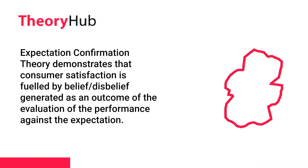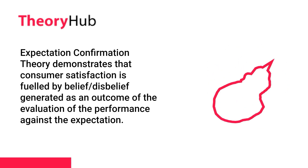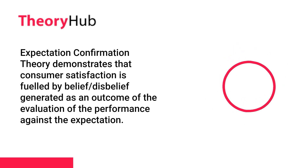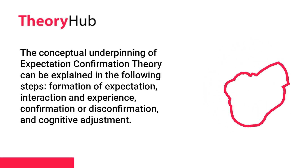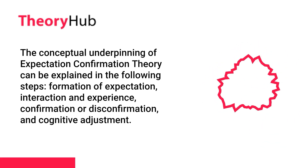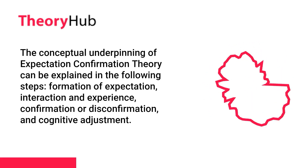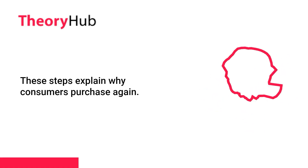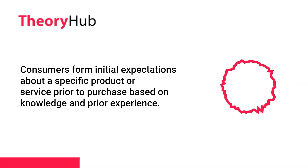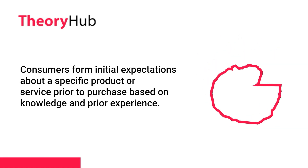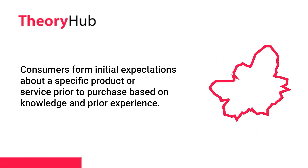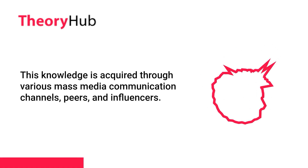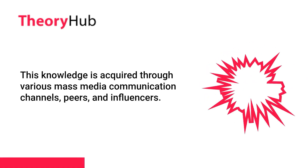Expectation Confirmation Theory demonstrates that consumer satisfaction is fueled by belief-disbelief generated as an outcome of the evaluation of performance against expectation. The conceptual underpinning of ECT can be explained in four steps: formation of expectation, interaction and experience, confirmation or disconfirmation, and cognitive adjustment. These steps explain why consumers purchase again. In the first step, consumers form initial expectations about a specific product or service prior to purchase based on knowledge and prior experience. This knowledge is acquired through various mass media communication channels, peers, and influencers.